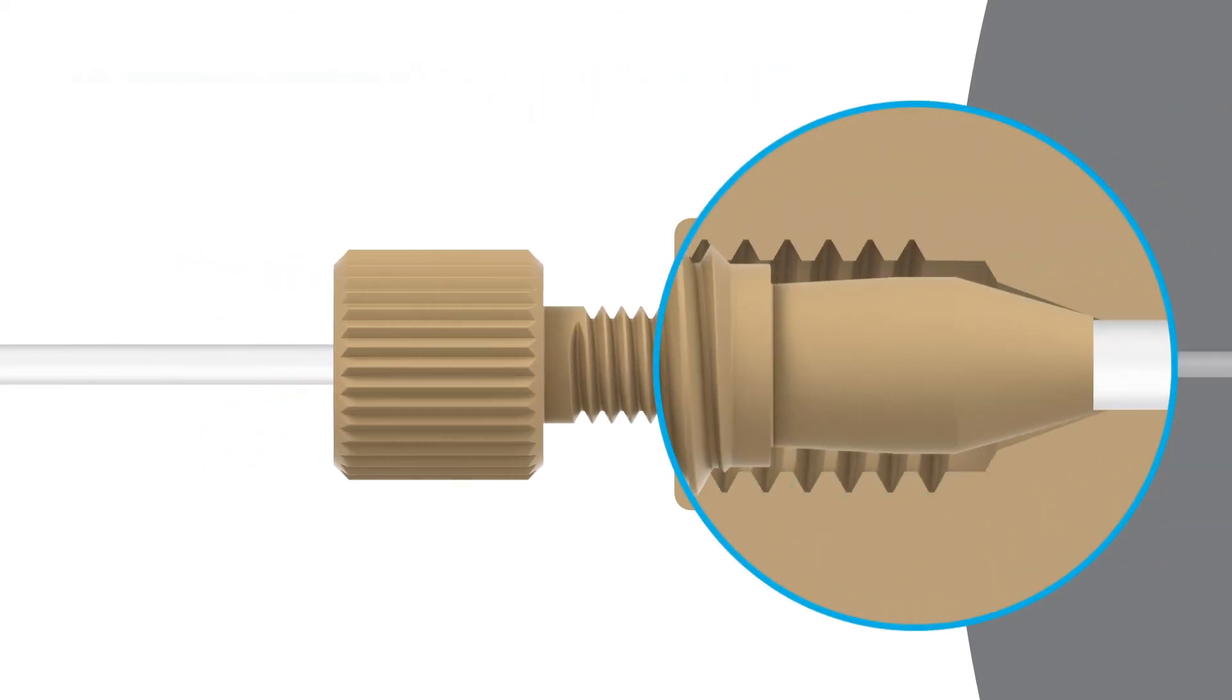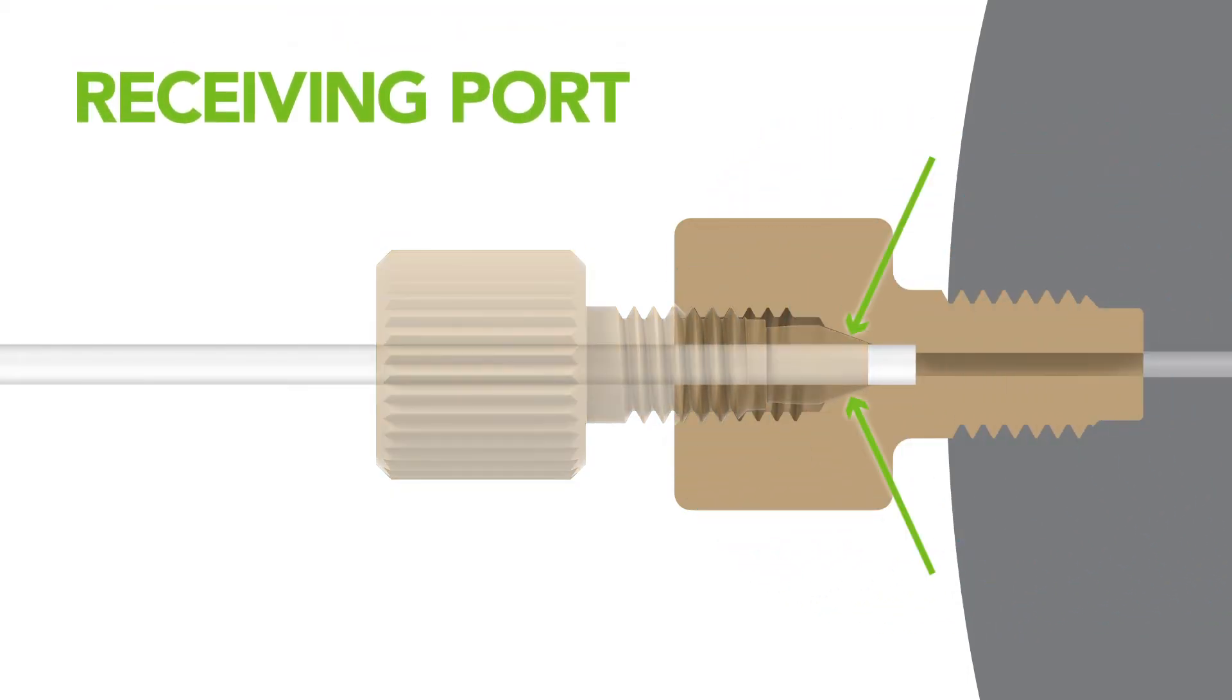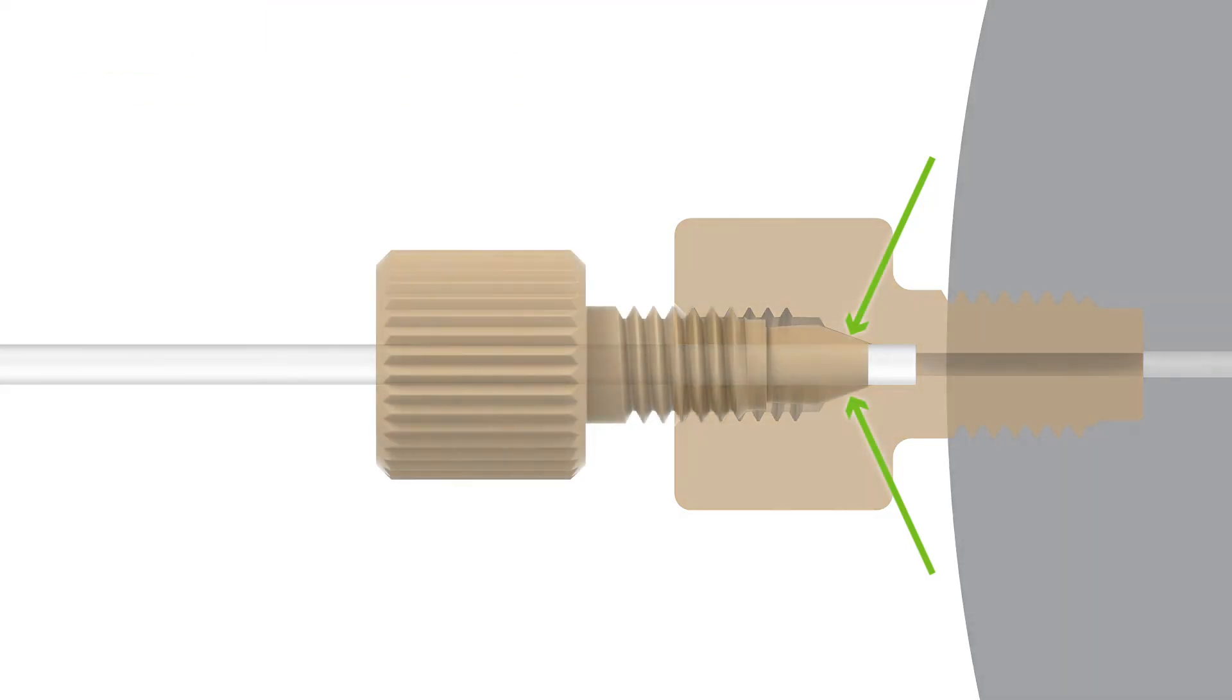The goal is to use a ferrule with a narrower angle than the receiving port, so that when the nut is tightened, the ferrule conforms to the port's angle and compresses against the tubing's wall. For a seal without leaks, the surface of both the receiving port and ferrule must be free of imperfections.